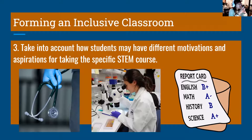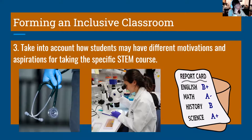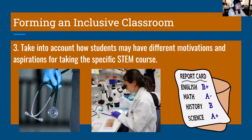Step three on forming an inclusive classroom is we have to take into account how students may have different motivations and aspirations for taking the specific STEM course. Not every single person in the classroom is taking this STEM course because they want to major in it. I personally teach Intro to Biology, and the three categories I've mainly observed from my students as to why they chose to take bio: the vast majority are pre-med or pre-health in some degree, taking this class to fulfill a pre-med requirement. Because they've chosen medicine as a career field, they're obviously interested in biology, but their main motivation is that it is required for their pre-med track.